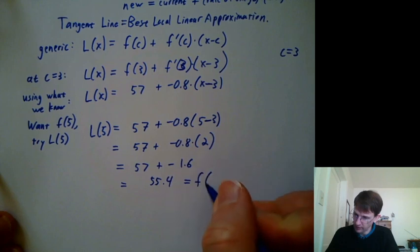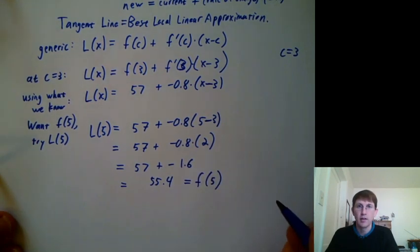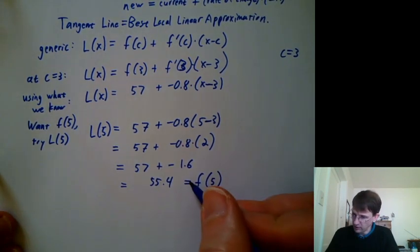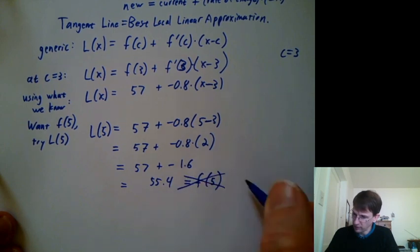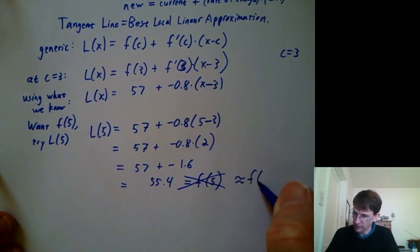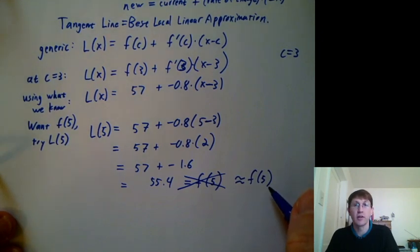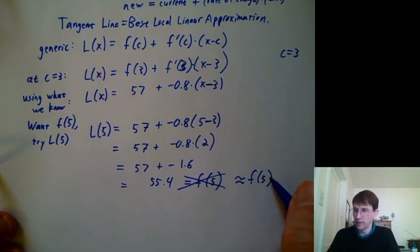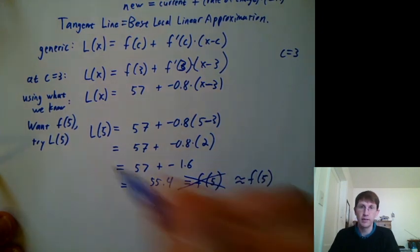And can we say that's f of 5? No, not equal necessarily. We'd say that is maybe approximately equal to f of 5. Maybe we're just very good guessers and that's exactly f of 5. But it's only approximate. It is the tangent line.